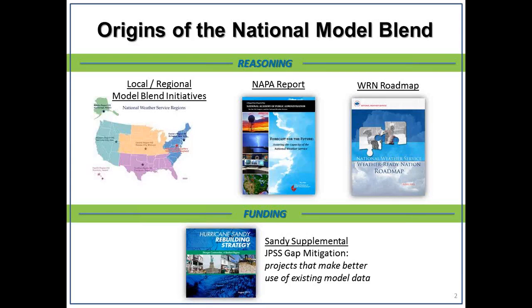The consistency aspect was about trying to blend across the boundaries of the WFOs themselves so that we wouldn't be building political boundaries into our final NDFD grid sets. This was an important complaint being levied against the Weather Service writ large. It became particularly noticeable through the NAPA report, which recognized our need to deal with consistency issues across the board, and pointed to the NDFD as one of the areas. We then built this into the roadmap, with the idea of providing a national basis for the Blender.